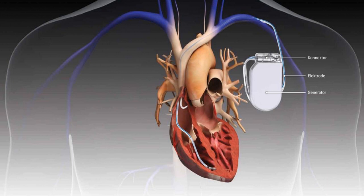The final category involves channelopathies — a broad range of conditions, generally genetic, affecting ion channels. Some you may have heard of include prolonged QT, which can be genetic or medication-induced, and Brugada syndrome. Certain patients who have those types of conditions and have unexplained syncope or episodes of VTach get cardioverter defibrillators.